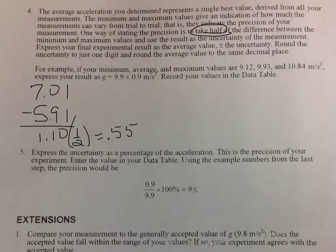And that's the uncertainty of the measurement. Express your final result as the average value plus or minus the uncertainty. So this would be 6.36 plus or minus 0.55 meters per second squared.